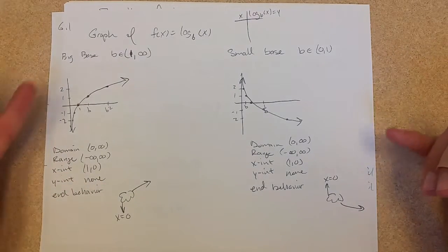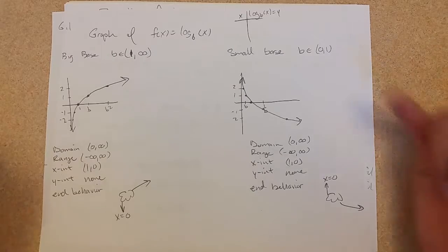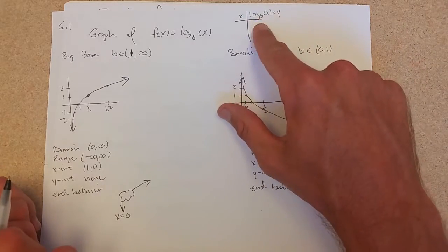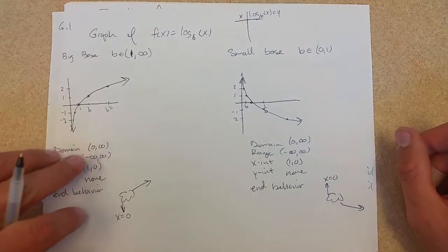So there is a graph of big base and little base. I could have made a table of values, and it would be much easier to pick the y and get the x out of that.